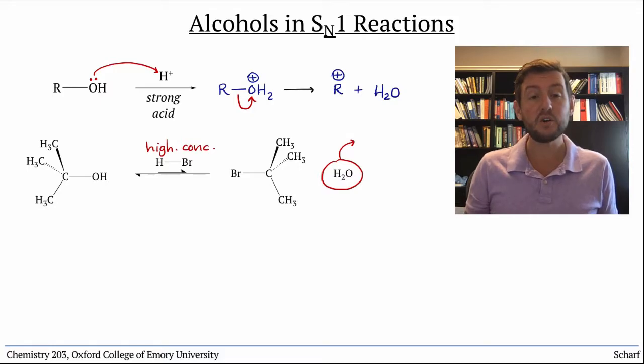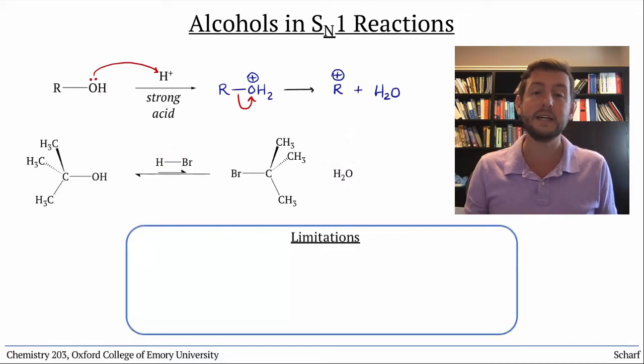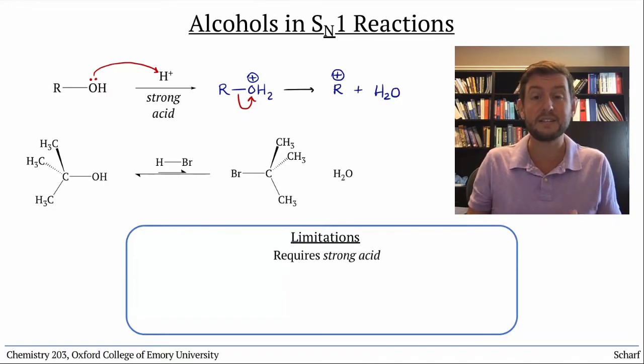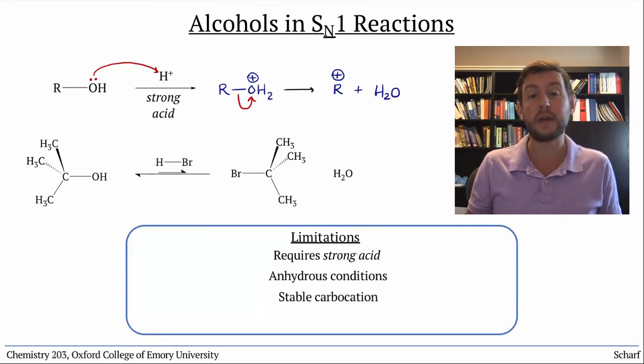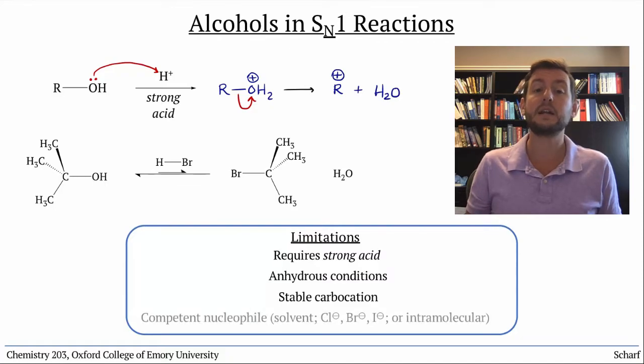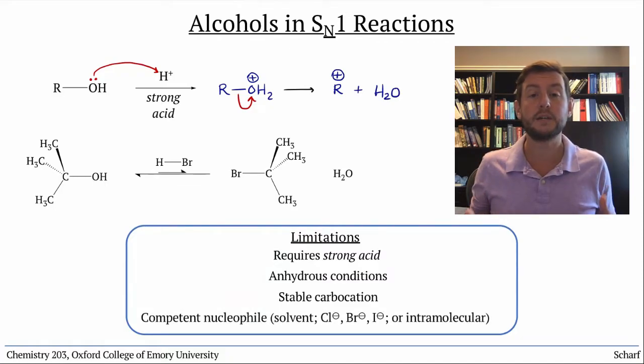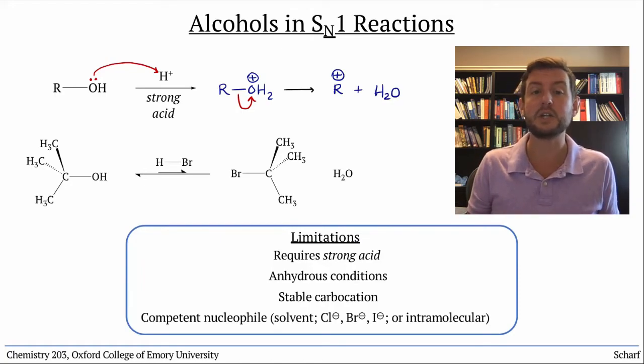The scope of the SN1 reaction of alcohols is quite limited. It requires a strong acid, anhydrous conditions, that is, no water present, a relatively stable carbocation to be formed, and that a competent nucleophile is present, either the solvent, the conjugate base of the strong acid, which limits us to HCl, HBr, or HI, or nearby within the molecule itself.